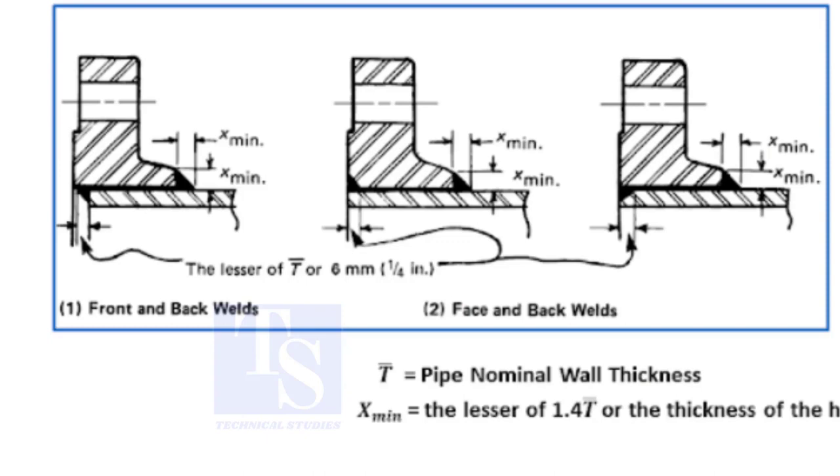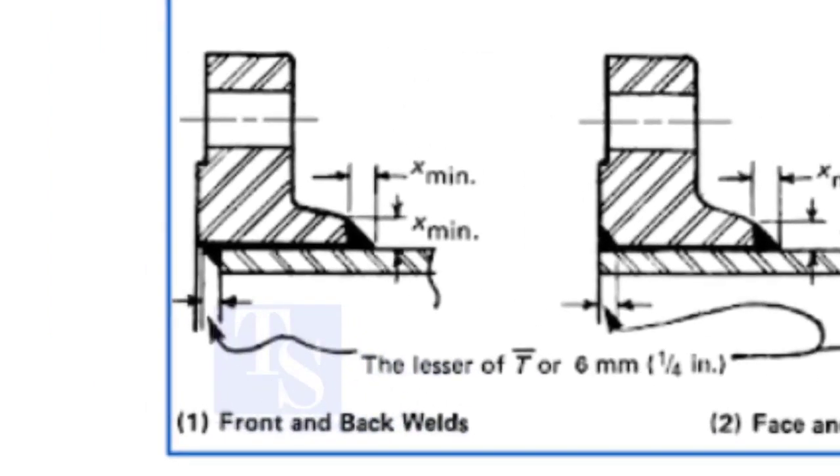As per the code, there are three different procedures for slip-on flange fit up. In the first method, the flange is overlapping the pipe. The overlap shall be the thickness of the pipe or a minimum 6 mm.